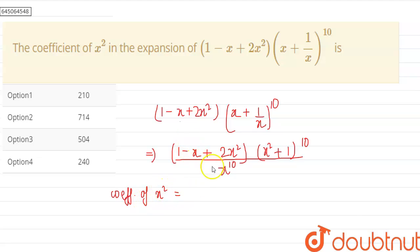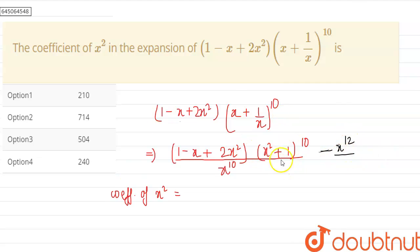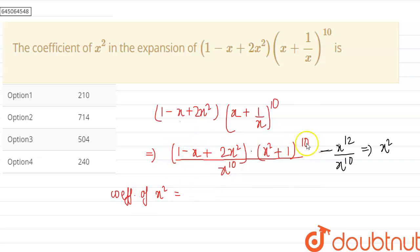To find the coefficient of x², we need x^12 in the numerator. Then only, when we divide by x^10, we get x². This is the idea. So to find the coefficient of x², we have to find the coefficient when multiplied by these three terms: 1, -x, and 2x².